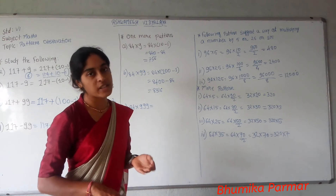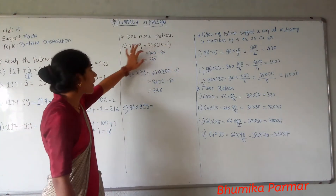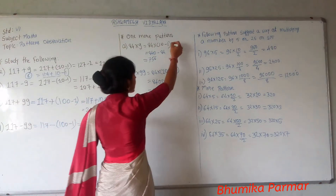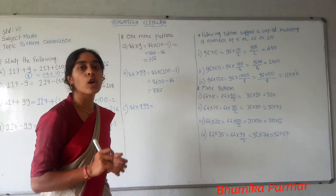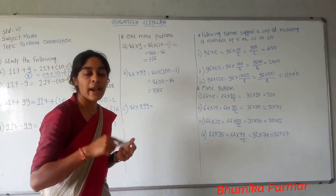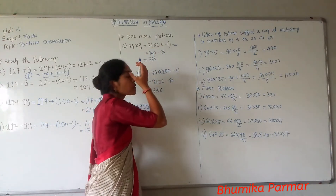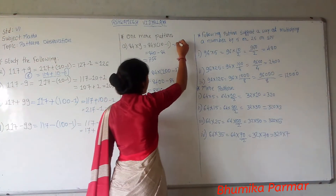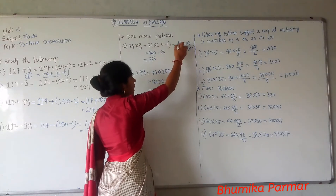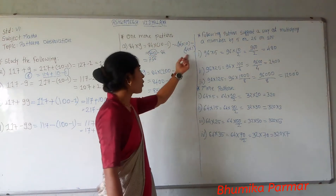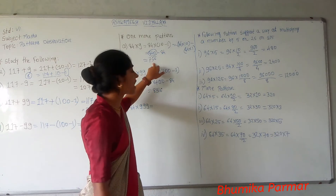For 84 times 9: we write it as 84 into 10 minus 1. Using the distributive property — multiplication over subtraction — we get 84 into 10 minus 84 into 1. This simplifies to 840 minus 84, which can be easily subtracted. So the answer is 756.